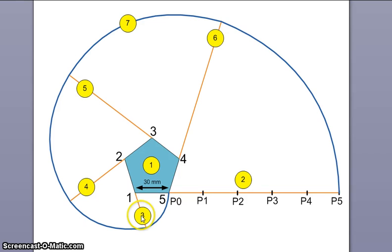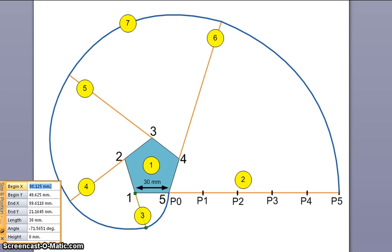Third thing you draw is this line here. Let me open one tool called size and position window. It tells me the length of this line. This line is 30 mm.